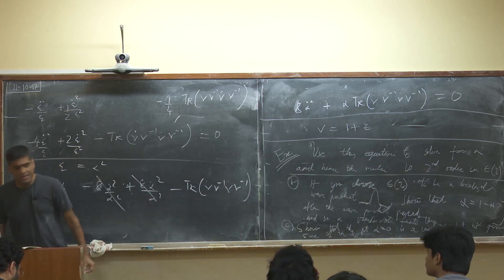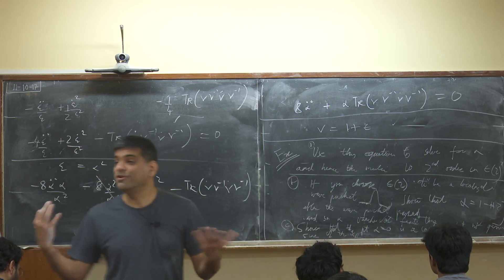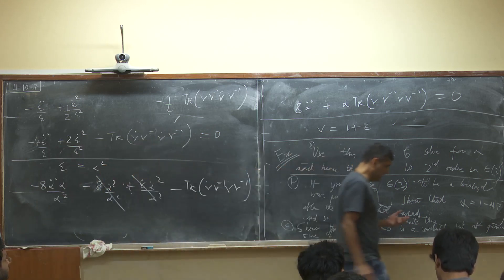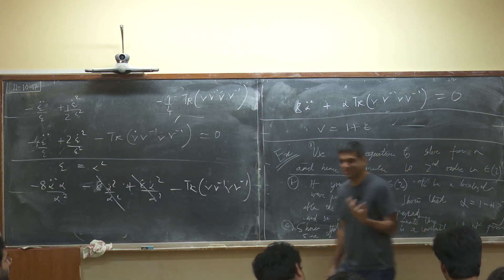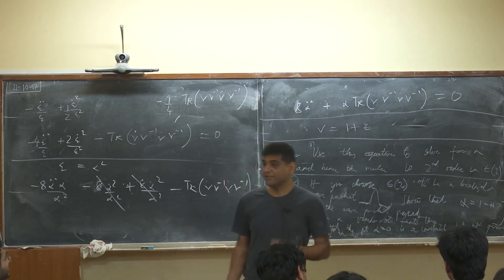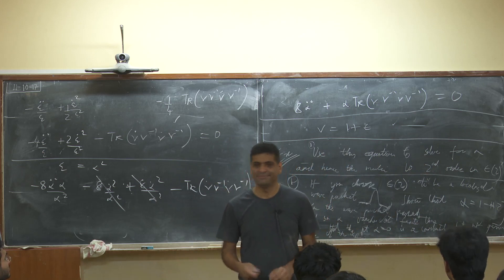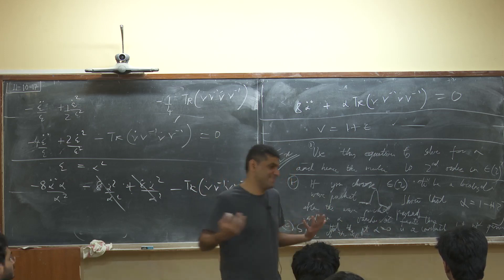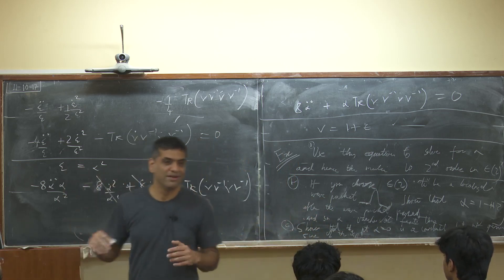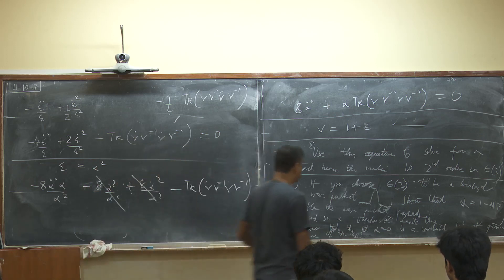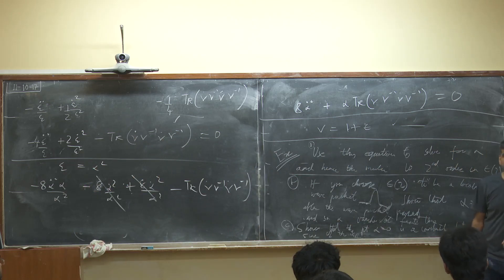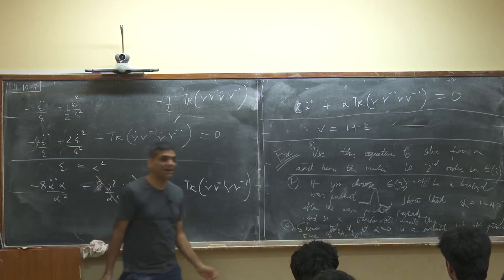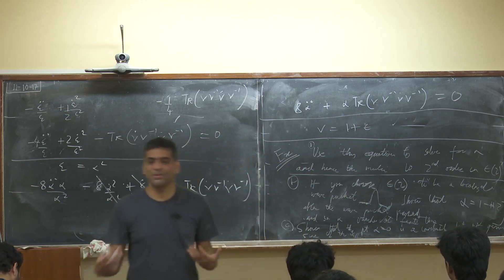Modulo that, you understand what these gravitational waves are, and you understand quite remarkably that you can find more or less exact non-linear solutions. Now, so far we've studied gravitational waves in vacuum. The next obvious question is: what produces gravitational waves? How are gravitational waves produced, and what is the formula for the production of gravitational waves?